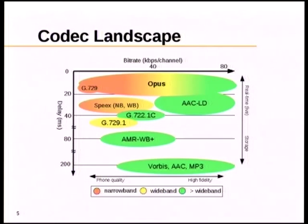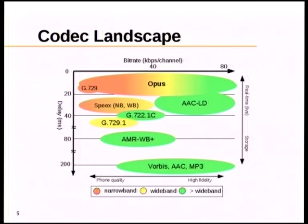Here I have a figure showing where Opus stands compared to other codecs. In terms of delay, Opus has lower or equal delay than any other audio codec out there, making it great for interactive applications. It also covers the entire range of bitrate. Unlike Speex, which has reasonable delay but limited bitrate, or Vorbis, which scales in bitrate but has too much delay for interactive applications, Opus can pretty much replace all of these codecs for all kinds of applications.